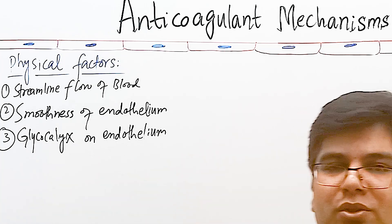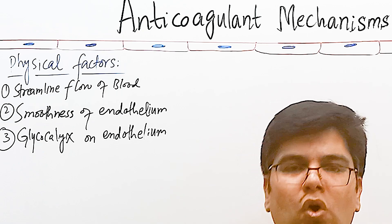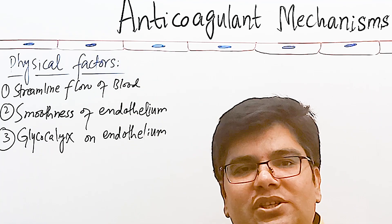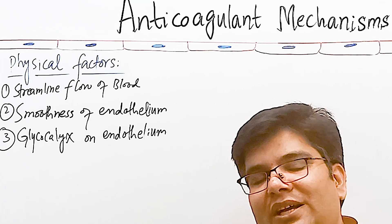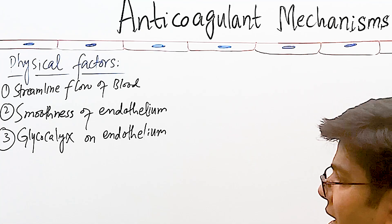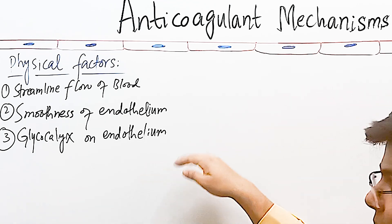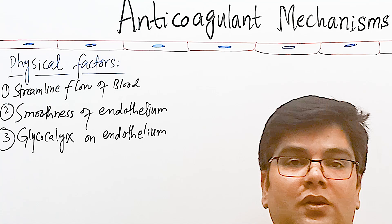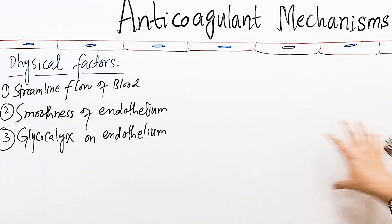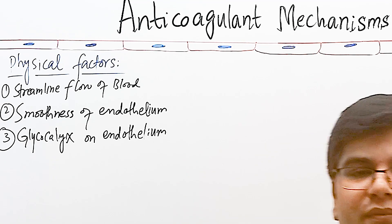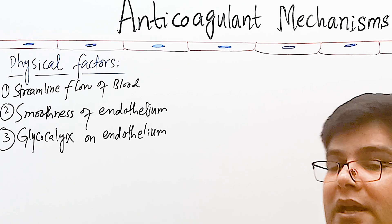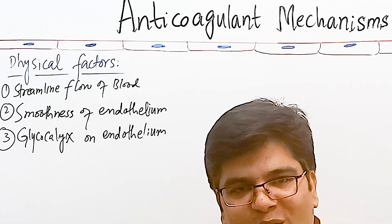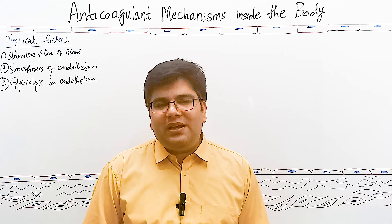The third important physical factor is the layer of glycocalyx on the endothelium. This endothelium has mucopolysaccharides on its surface which are negatively charged. Because this glycocalyx is negatively charged, it repels other negatively charged substances — clotting factors and also the surface of platelets. Hence platelets and clotting factors do not attach to normal endothelium, and clotting is prevented.